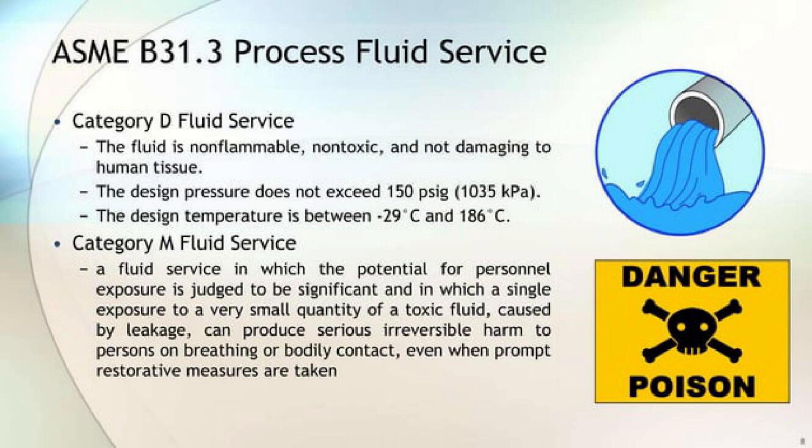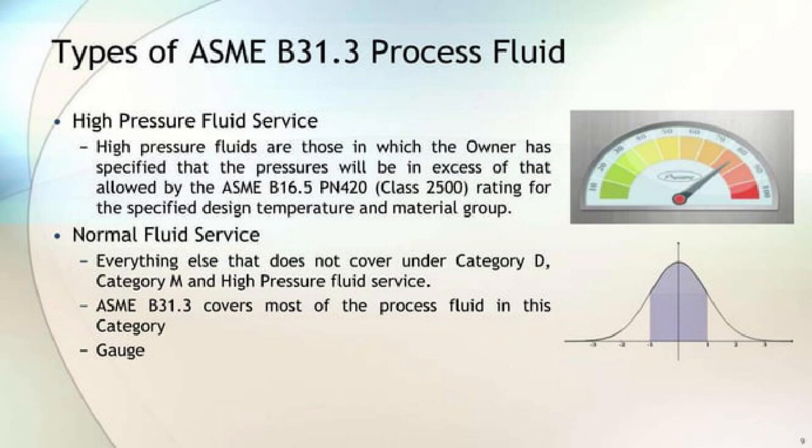Category M Fluid Service: a fluid service in which the potential for personal exposure is judged to be significant, and in which a single exposure to a very small quantity of toxic fluid caused by leakage can produce serious irreversible harm to persons on breathing or bodily contact, even when prompt restorative measures are taken. Type 1 — High Pressure Fluid Service: high pressure fluids are those in which the owner has specified that the pressures will be in excess of that allowed by the ASME B16.5 PN420, Class 2500 rating for the specified design temperature and material group.